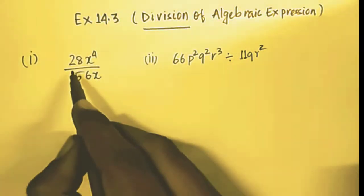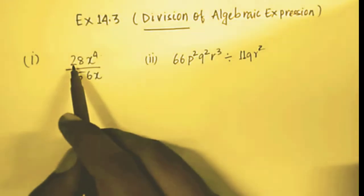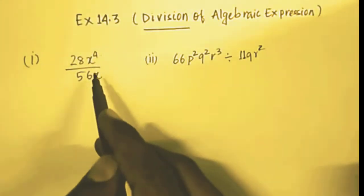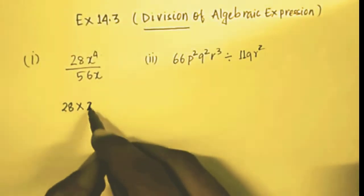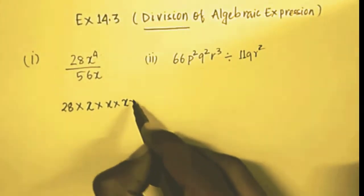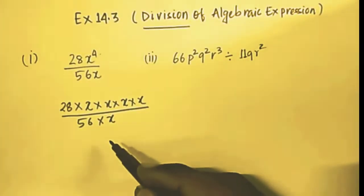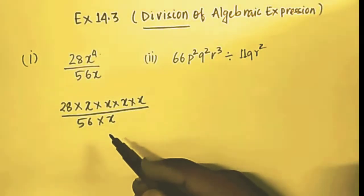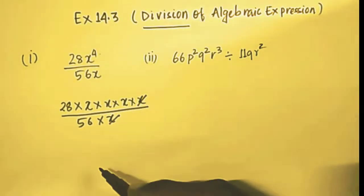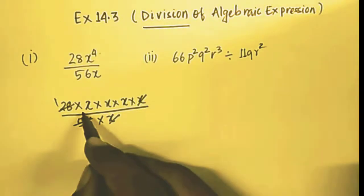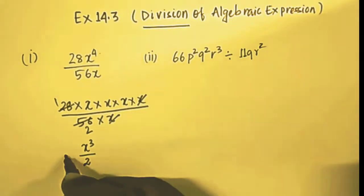In this first question we have 28x to the power 4 divided by 56x. We will divide the number by number and variable by variable. So 28 into x multiplied 4 times, divided by 56 multiplied by x. This x and x will be cancelled out and 28 simplifies. Our answer will be x to the power 3 divided by 2.